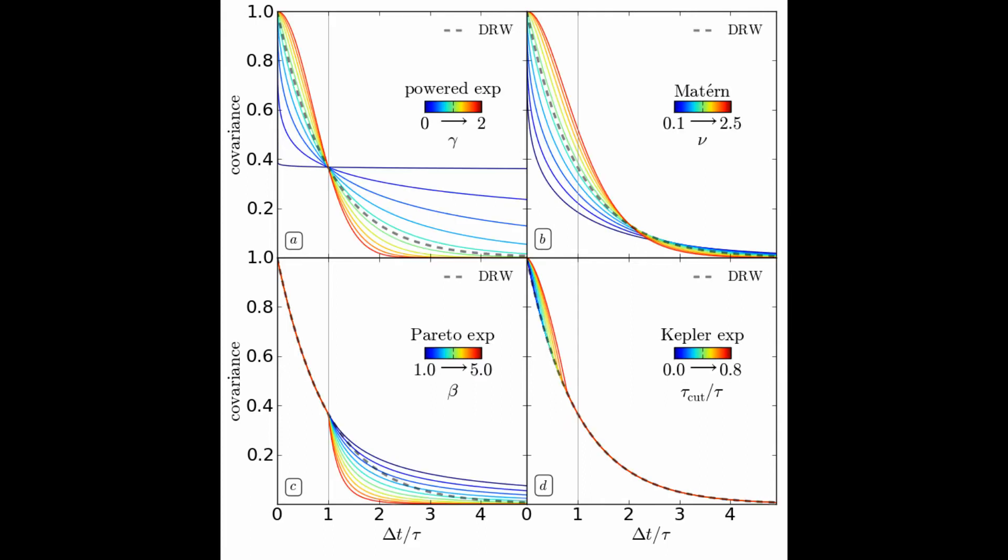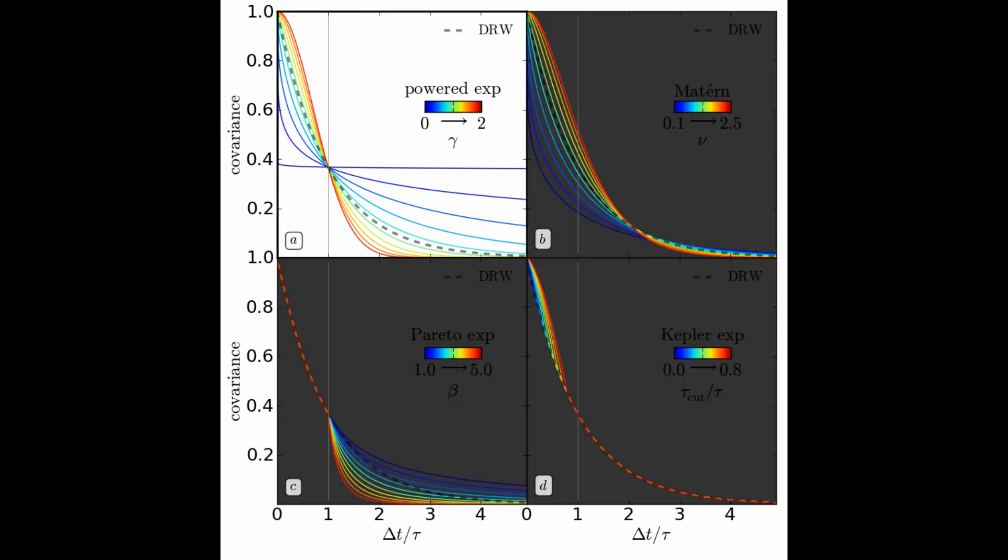We will concentrate on two modifications in this coffee brief. Start from the powered exponential model on the top left. The additional parameter gamma changes both short and long timescale behaviors simultaneously and recovers the DRW model when gamma equals 1.